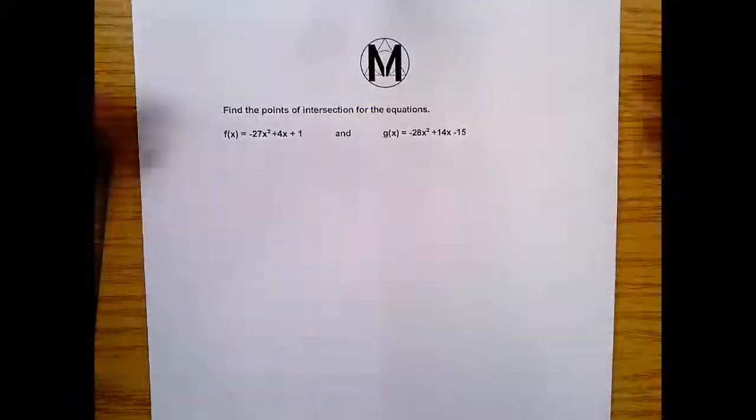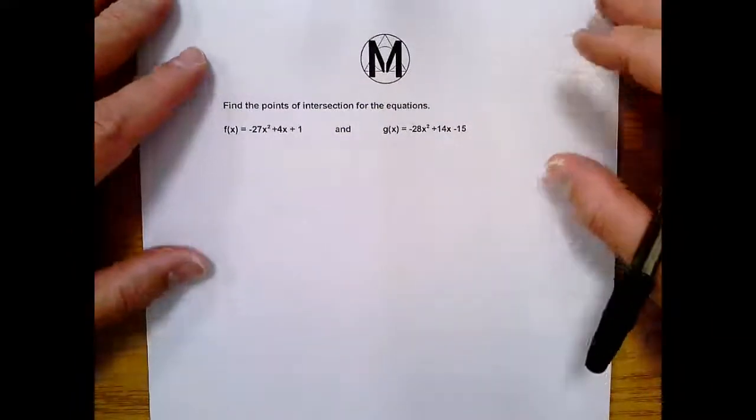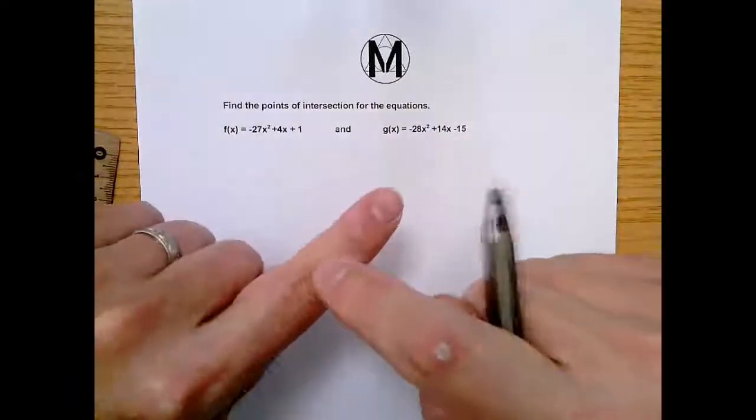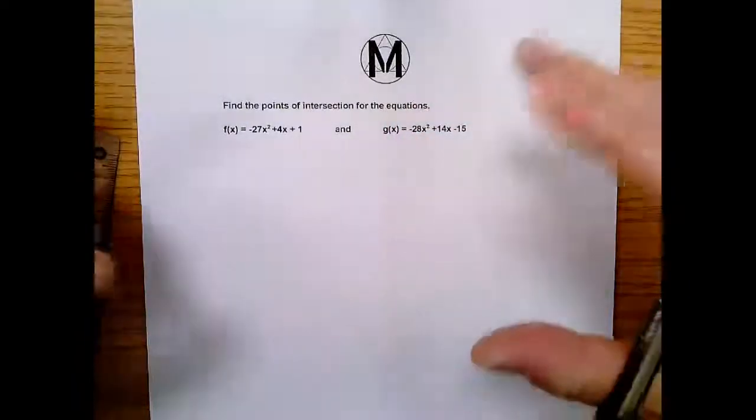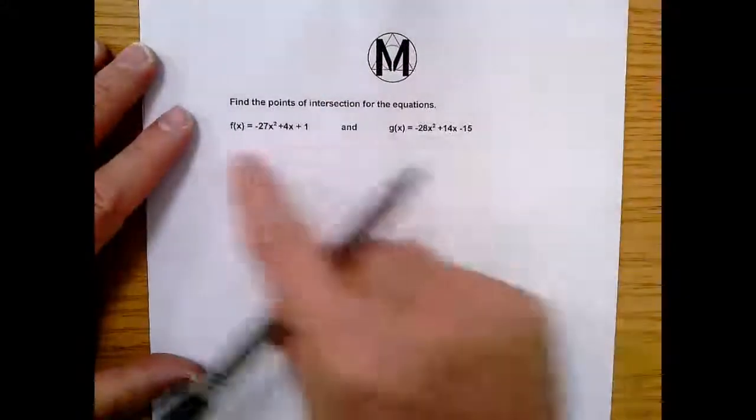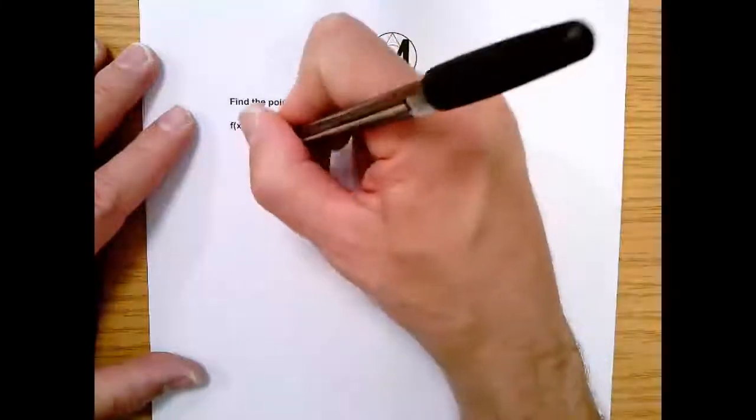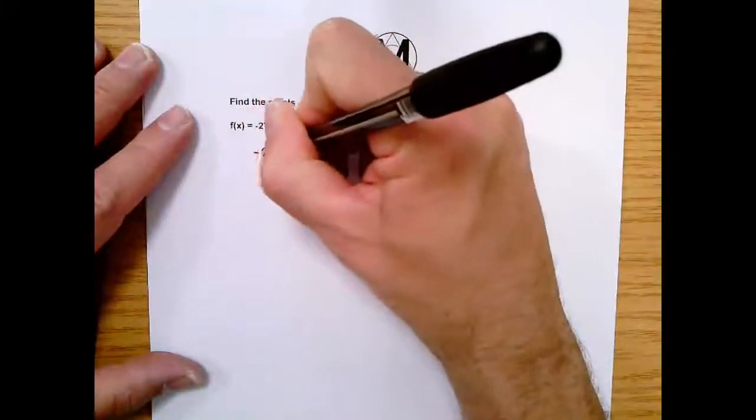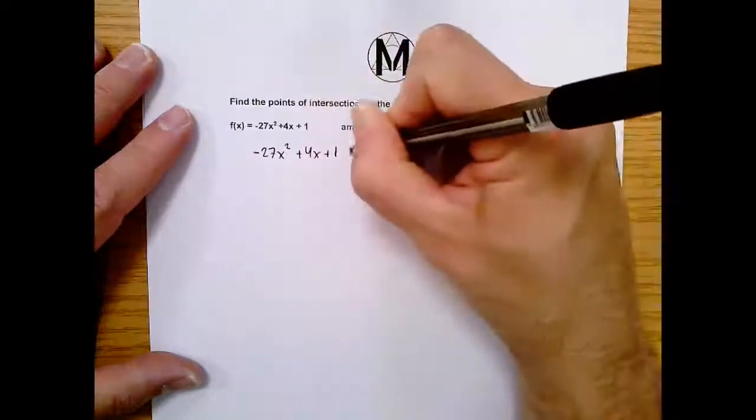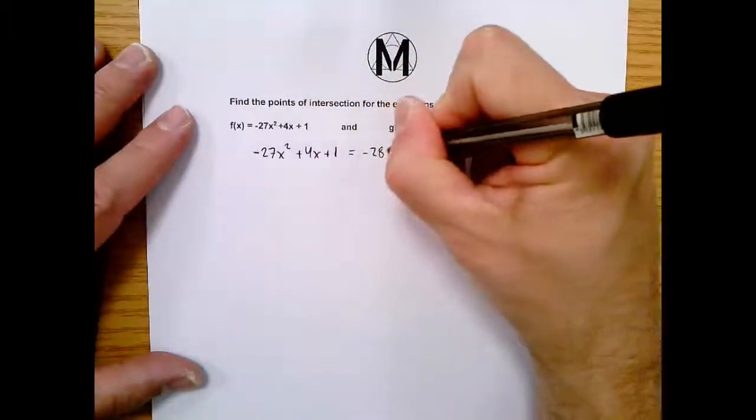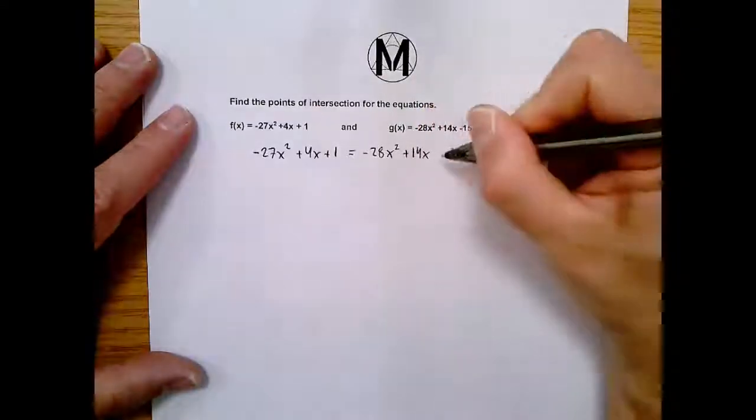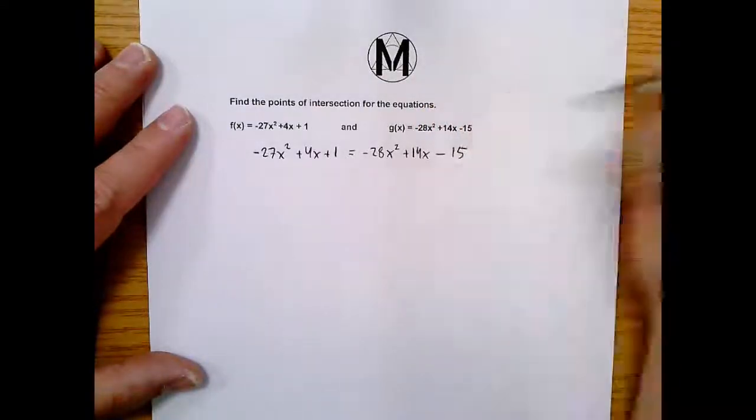Essentially this is saying, where do the parabolas cross? The idea here is that when a parabola crosses at that point of intersection, at that point of crossing, they're actually the same. And when something is the same, we call it equal. So we're going to say -27x² + 4x + 1 = -28x² + 14x - 15.